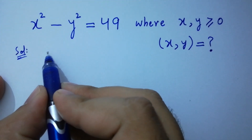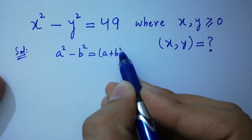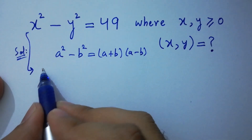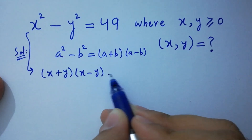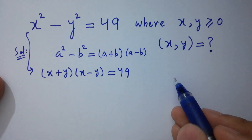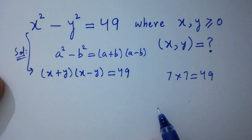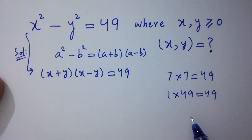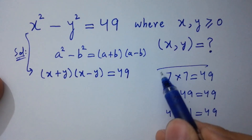We know the formula a squared minus b squared equals a plus b times a minus b. Applying this, we have x plus y times x minus y equal to 49. We can see there are 3 cases: 7 times 7, 1 times 49, and 49 times 1, all equal to 49.